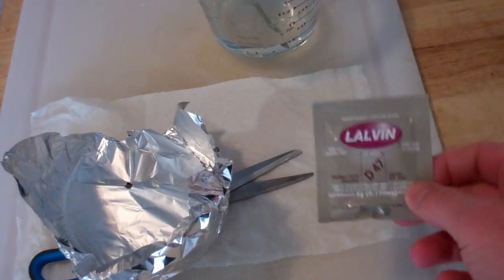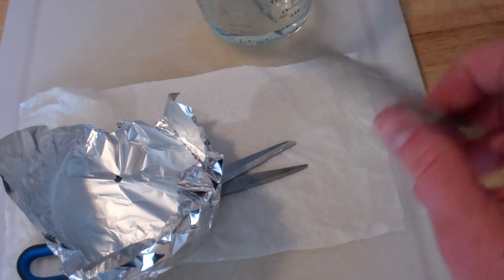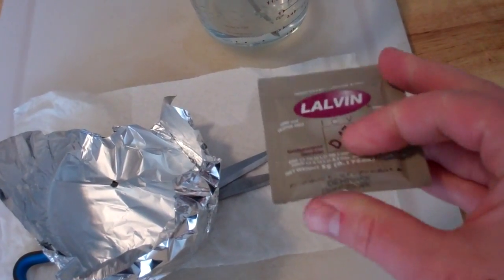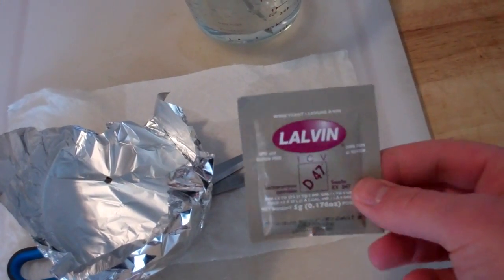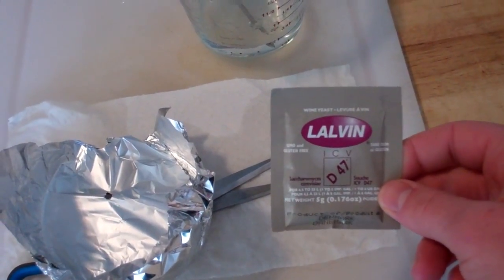An important step when you're pitching dry yeast is to rehydrate it. If you pitch dry yeast directly into wort, you lose about half of the living cells. So I'm going to show you how to do that. Pretty simple.